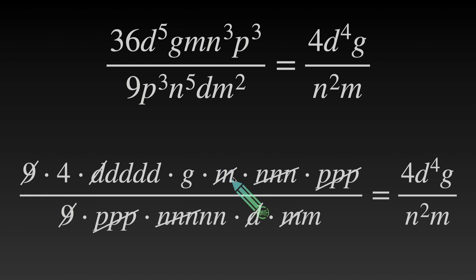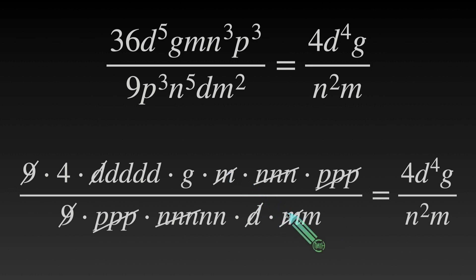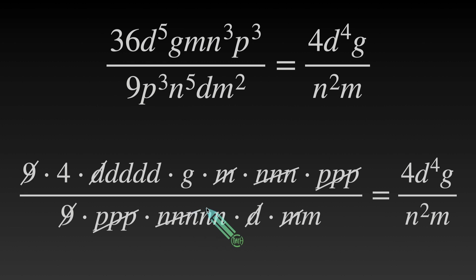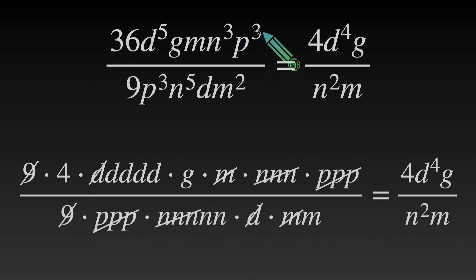Now let's look at our m's. We have a single m in the numerator, and m squared — that's m times m — in the denominator. We cancel one at the top and bottom, leaving m in the denominator. n cubed is n times n times n, and n to the 5th is at the bottom. We cancel out 3 from both numerator and denominator, leaving n squared in the denominator. And finally, p cubed is p times p times p — they all cancel out with the p cubed at the bottom, as mentioned.